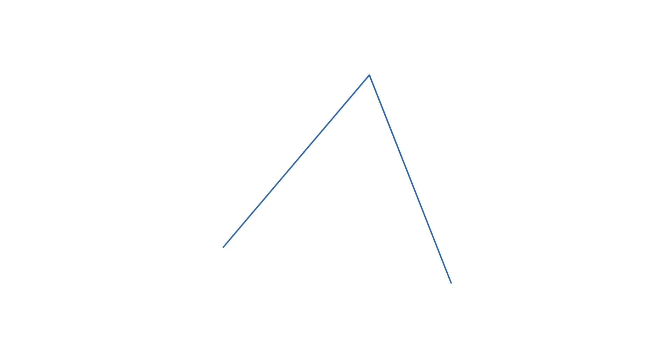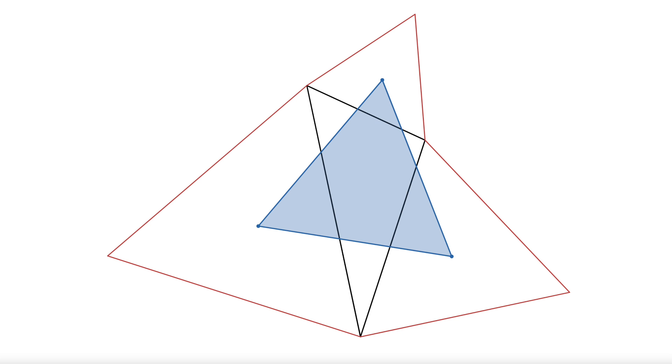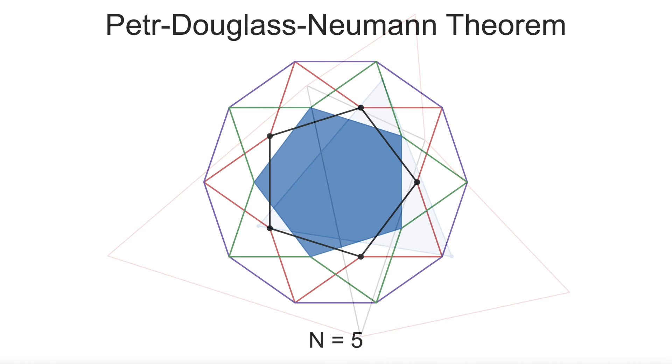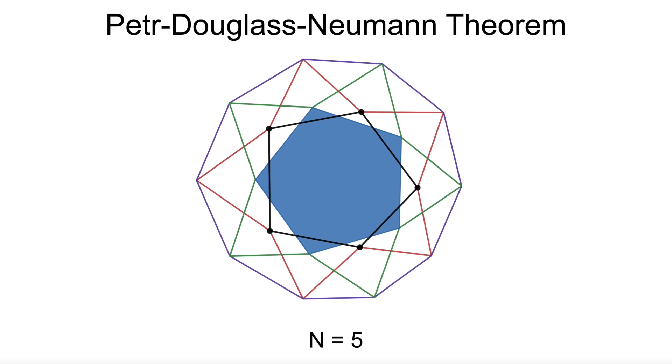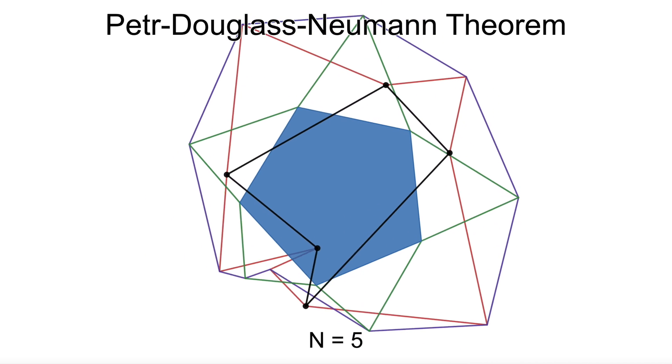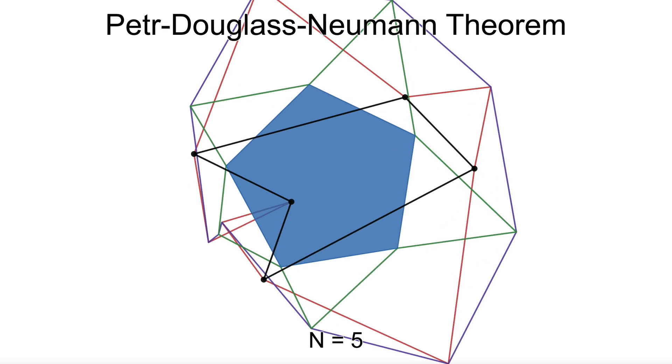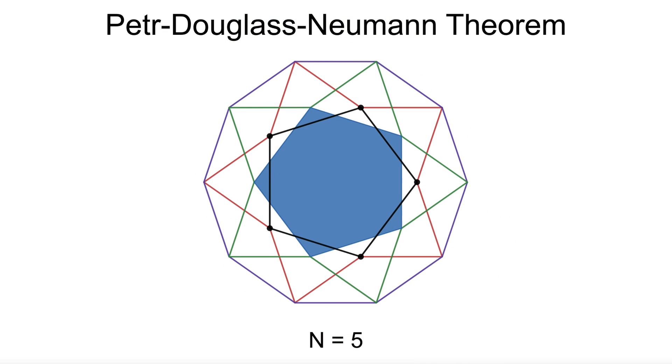Before you go, I should point out that Napoleon's and Van Obel's theorems are both special cases of a theorem that works for polygons with any number of sides, called the Petr-Douglass-Neumann theorem. This is a marvelous theorem that lends itself to some really nice animations. And maybe someday I'll figure out how to explain its proof clearly enough for another video.